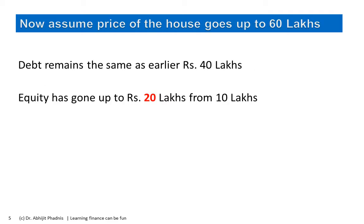Now let us assume that the price of the house goes up to 60 lakhs, and let us also assume that we have not yet repaid any debt. So debt remains the same at 40 lakhs. However, your equity has suddenly surged to 20 lakhs. Equity owners always have the residuary claim — whatever remains after paying off debt belongs to them. Debt owners do not have any claim on the price appreciation.